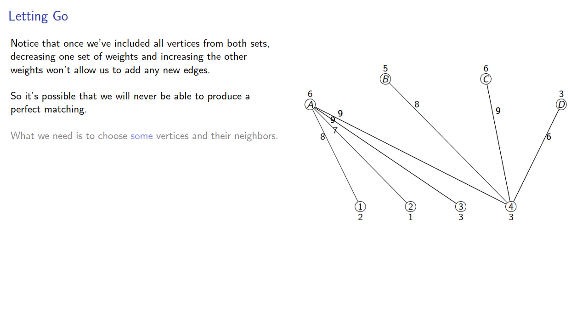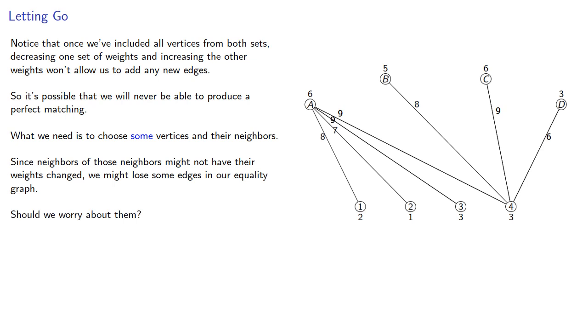What we need to do is to choose some vertices and their neighbors. Since neighbors of those neighbors might not have their weights changed, we might lose some edges in our equality graph. Should we worry about them?